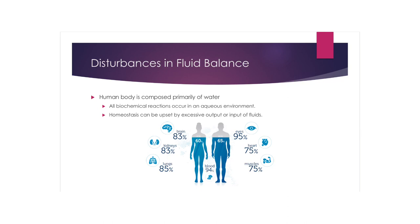Let's talk about disturbances in fluid balance. The human body is composed primarily of water, and all biochemical reactions taking place within the body occur in an aqueous environment. Changes in fluid and electrolyte balance that disrupt homeostasis can either cause or exacerbate various disease processes. Homeostasis can be upset in a number of ways, such as by excessive output or input of fluids — profuse sweating, excessive salt intake, dehydration. A person deprived of water for three days or more may die.